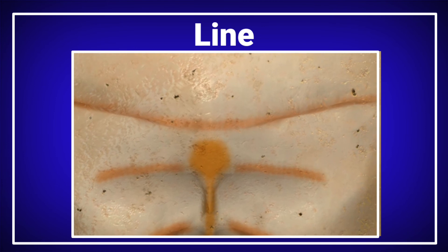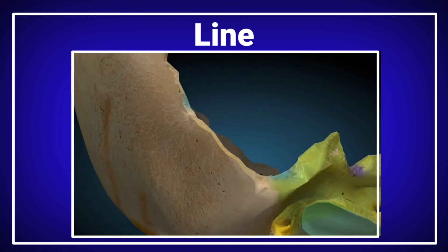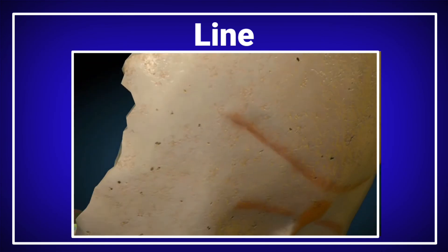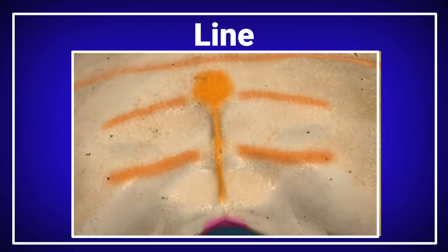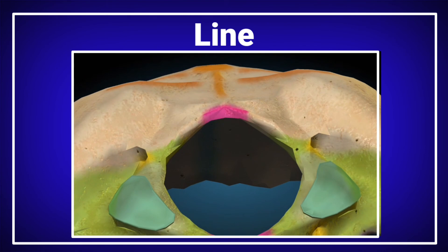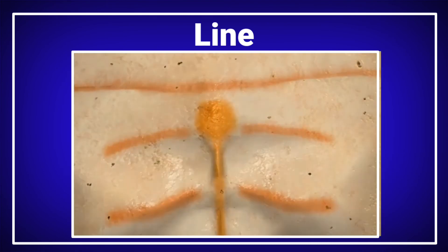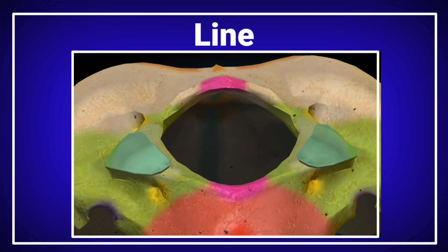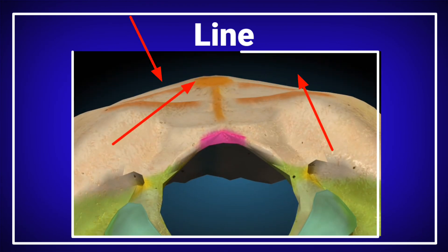There are three different kinds of nuchal lines on the occipital bone. These nuchal lines can be seen on the screen. This portion shows the elevation of the nuchal lines from the back side of the skull.